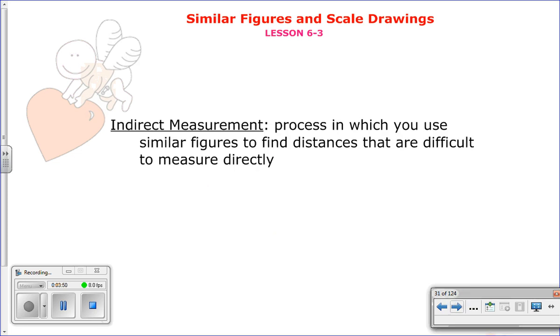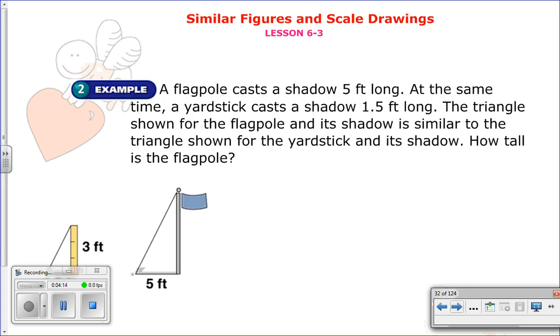Alright, now we did ones with shapes. So we had a direct measurement. But sometimes you don't have something directly to measure. It's either too big or the distance is too far. So that's when we use indirect measurements. This is a process in which you use the similar figures. So again, they're the same shape, but they're not the same size. To find distances that are difficult to measure directly. And I have an example on this next page.